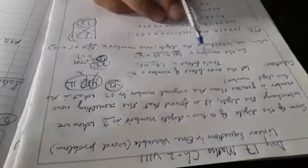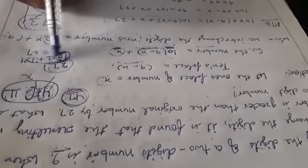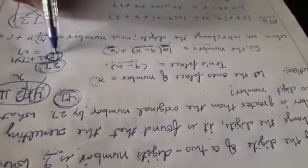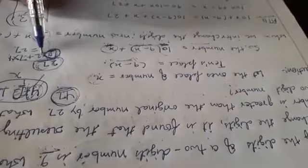Now we write down the number as 10(9 minus x) plus x. The 10 comes from expanded form — for example, 27 is written as 10 into 2 plus 7 into 1, because 2 is in the tens place with place value 10, and 7 is in the unit place with place value 1. Similarly, we write 10 times (9 minus x) plus x.